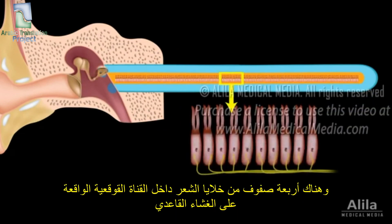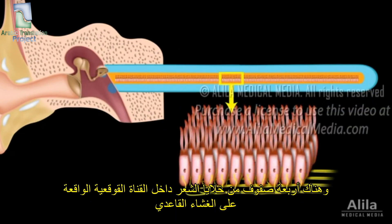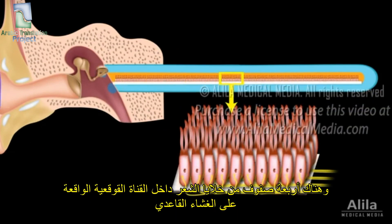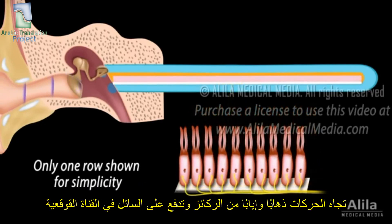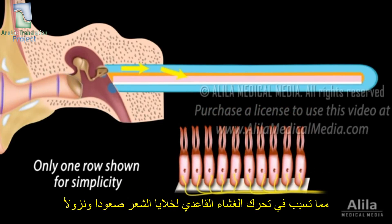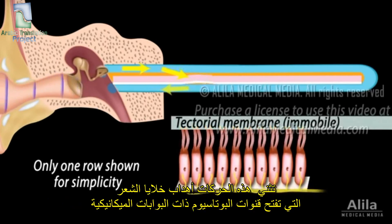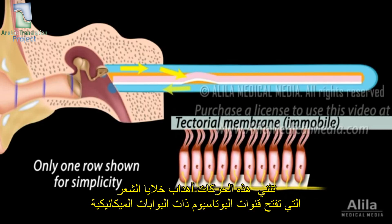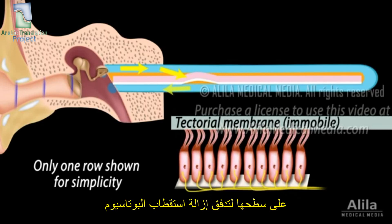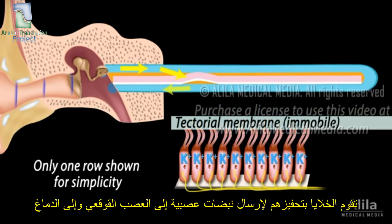There are four rows of hair cells within the cochlear duct, supported on the basilar membrane. The movements back and forth of the stapes push on the fluid in the cochlear duct, causing the basilar membrane and the hair cells to move up and down. These movements bend the cilia of hair cells, opening mechanically-gated potassium channels on their surface. Influx of potassium depolarizes the cells, stimulating them to send nerve impulses to the cochlear nerve and on to the brain.